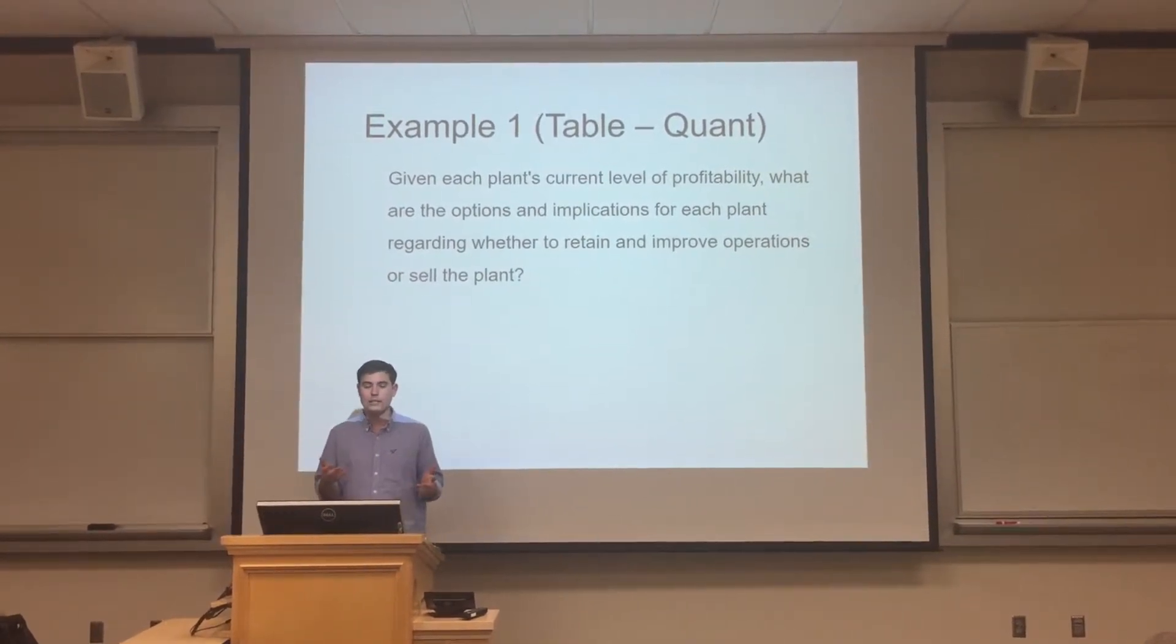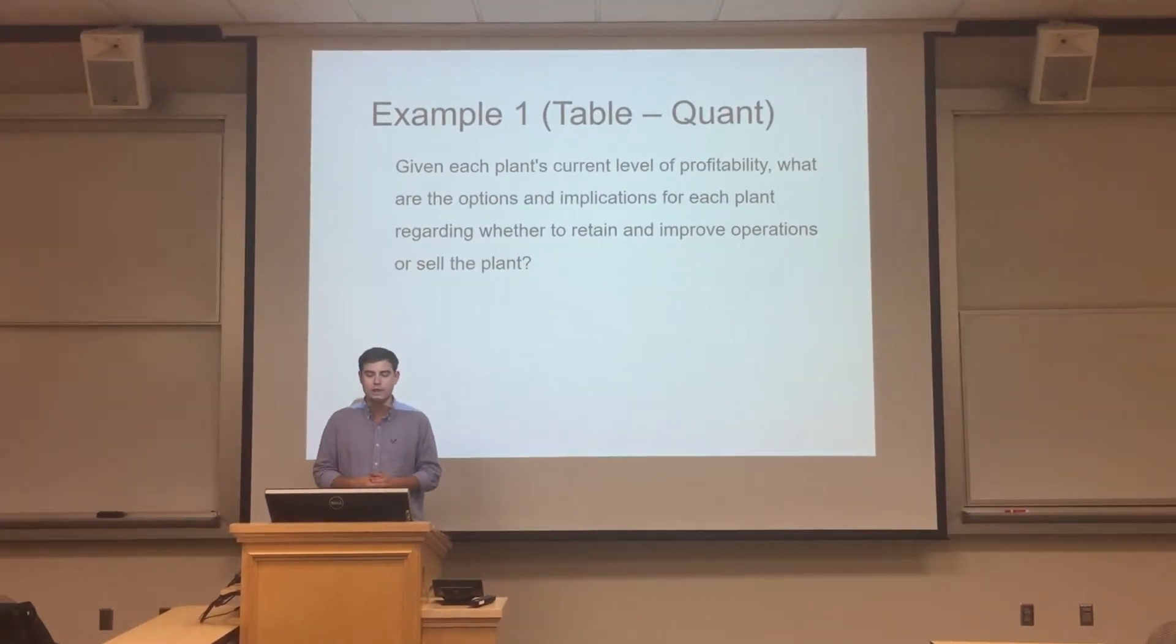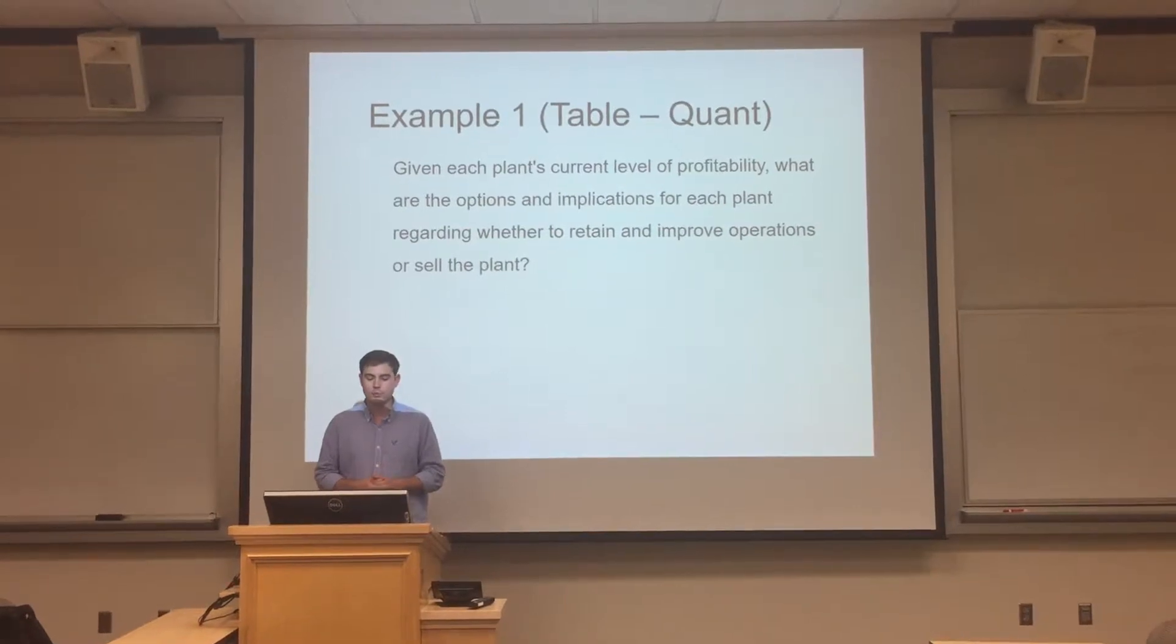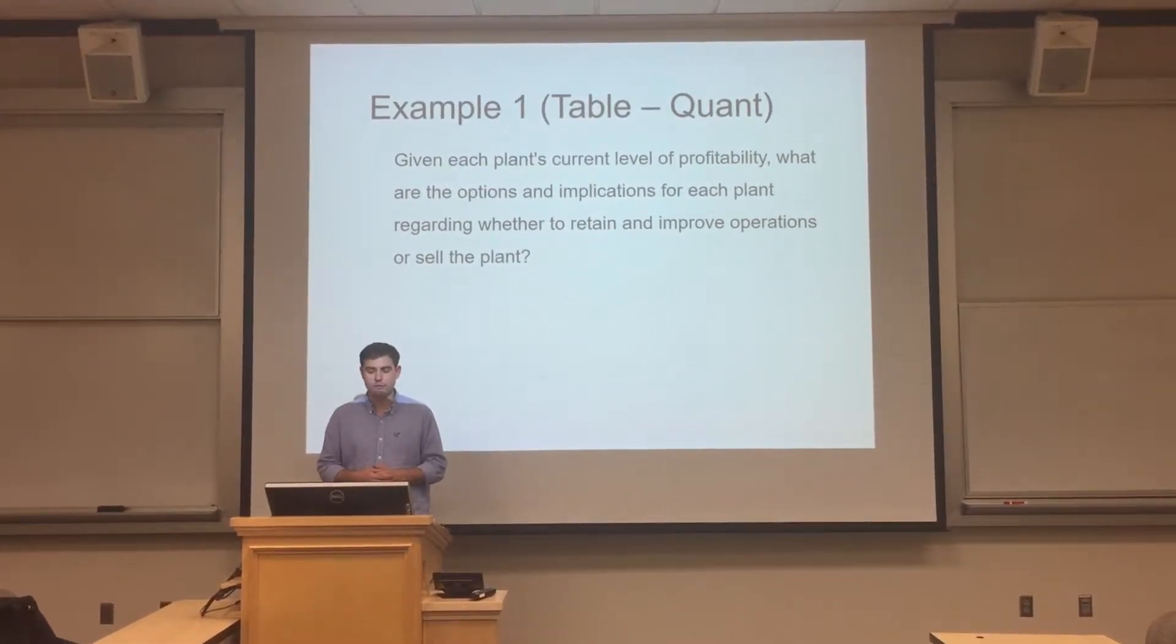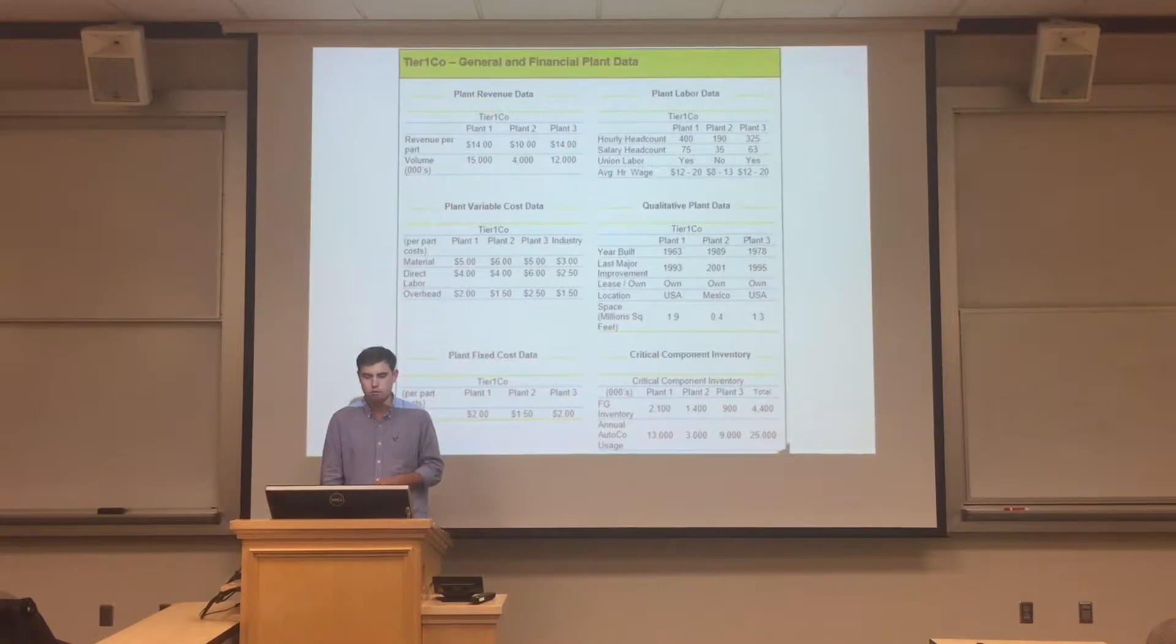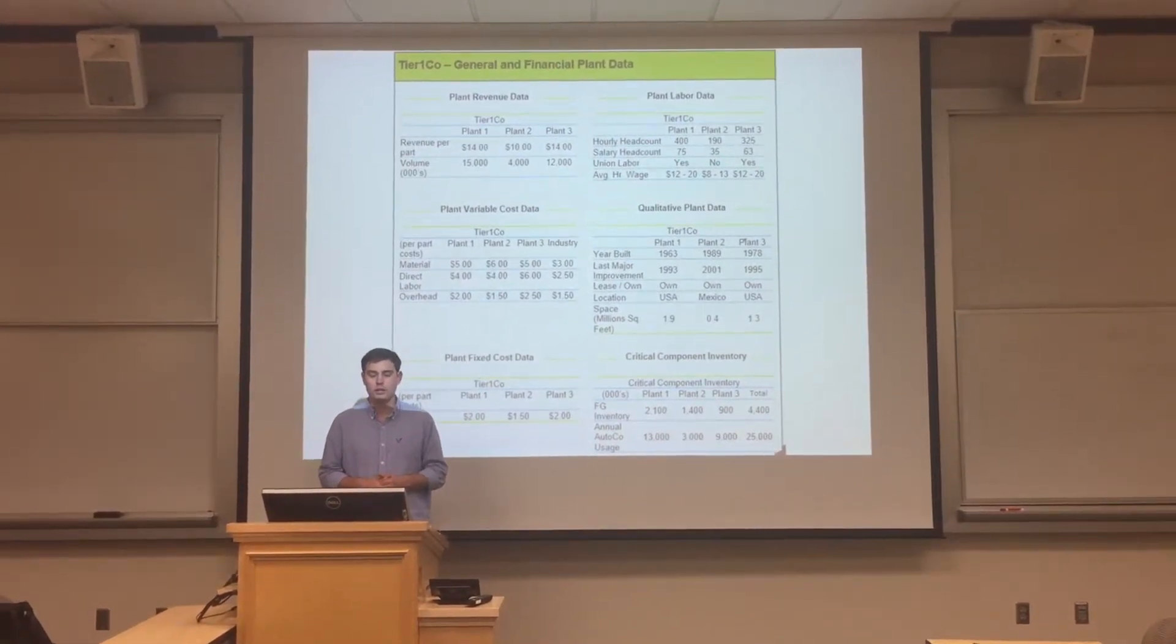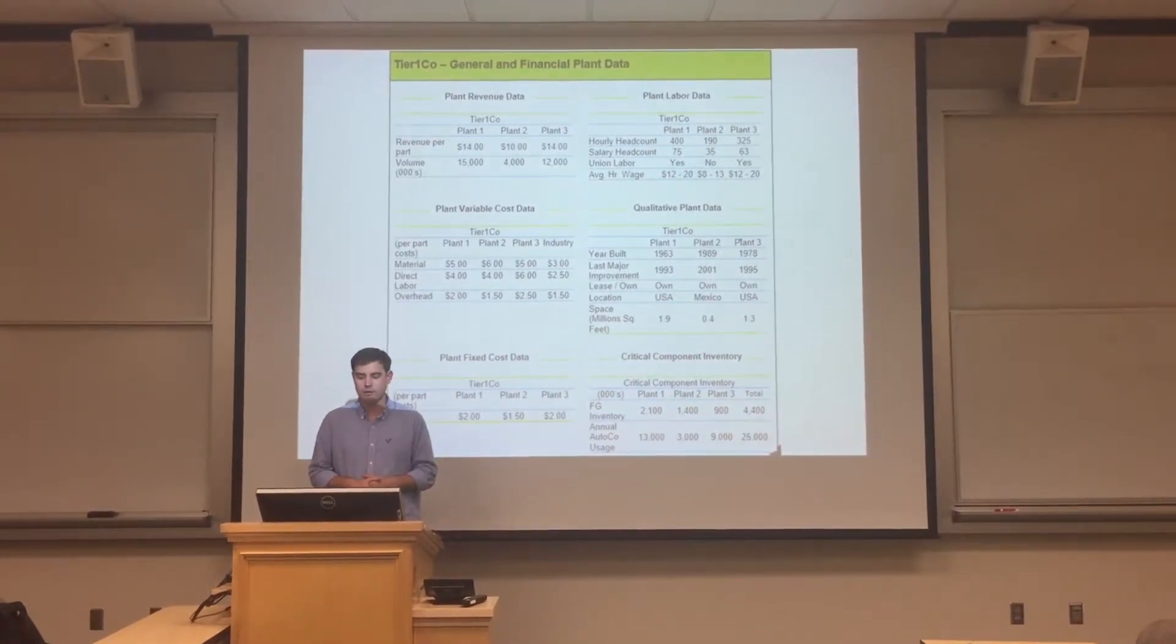Now let's move on to our first example. The example one is going to be a table exhibit and it will require us to do some quantitative calculations. Here's the question. Given each plant's current level of profitability, what are the options and implications for each plant regarding whether to retain and improve operations or sell the plant? And here's the exhibit. Why don't you pause the video and take a look at this exhibit?